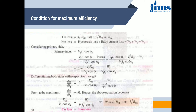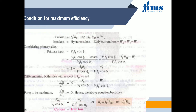Now we find the condition for maximum efficiency. Efficiency η = (input − losses) / input = (V1·I1·cos φ1 − I1²·R01 − WI) / (V1·I1·cos φ1). This simplifies to η = 1 − (I1·R01)/(V1·cos φ1) − WI/(V1·I1·cos φ1). Differentiating with respect to I1 and setting dη/dI1 = 0 gives: R01/(V1·cos φ1) = WI/(V1·I1²·cos φ1). For maximum efficiency, this becomes WI = I1²·R01, or equivalently WI = I2²·R02.